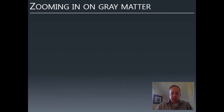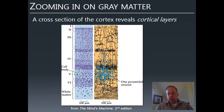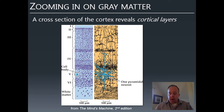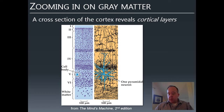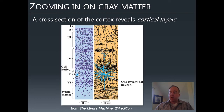Gray matter is not a uniform mishmash of neurons—it has organization. If you look at gray matter under a microscope, it's organized into cortical layers. The cell bodies of different neurons cluster together rather than being uniformly spread throughout, forming layers that talk to one another. There's an organizational scheme. When we see close-up images of cortex in the future, you'll notice these layers are present.